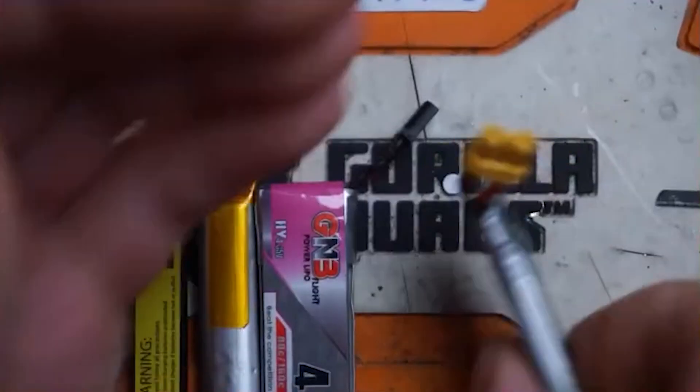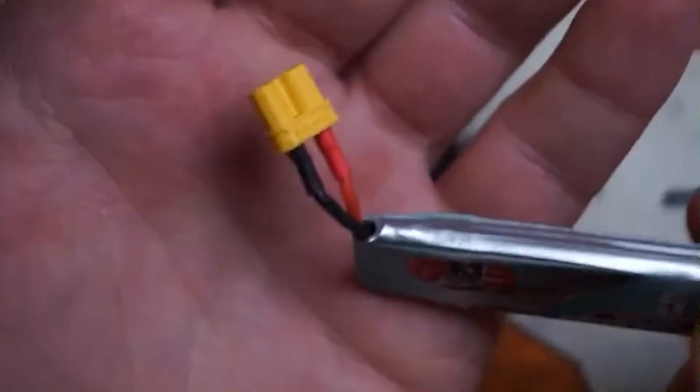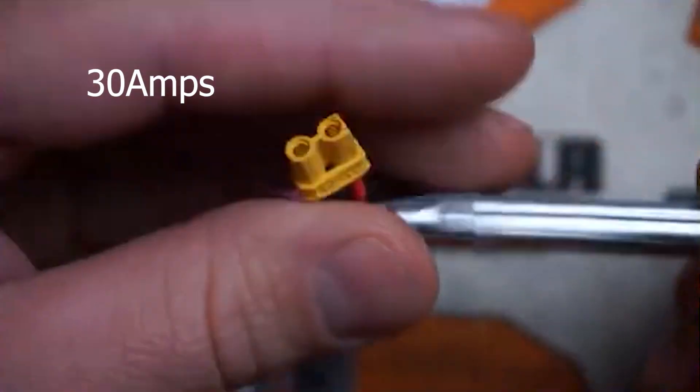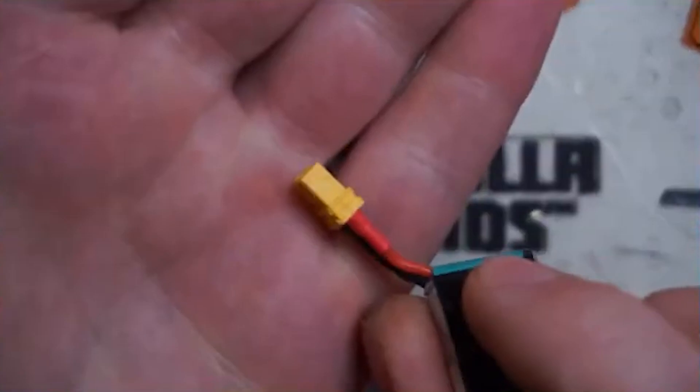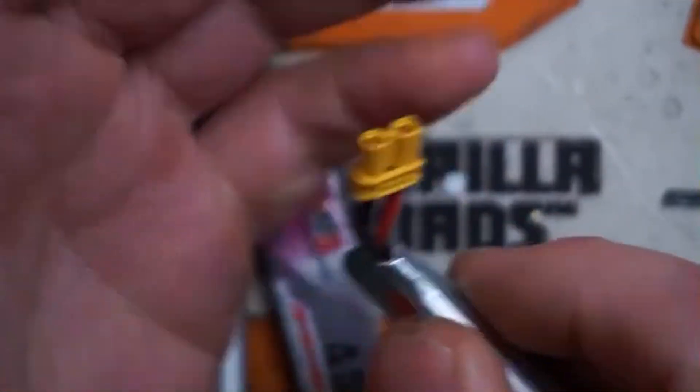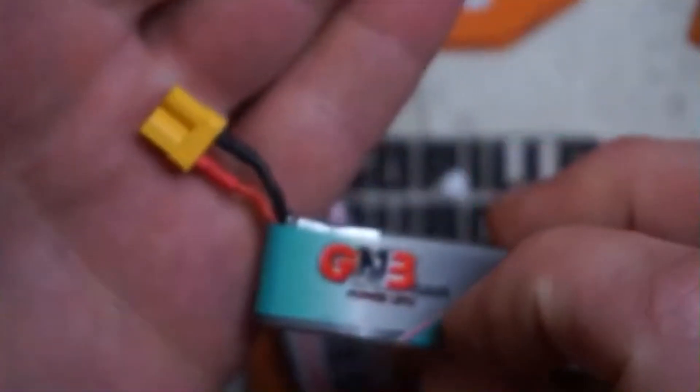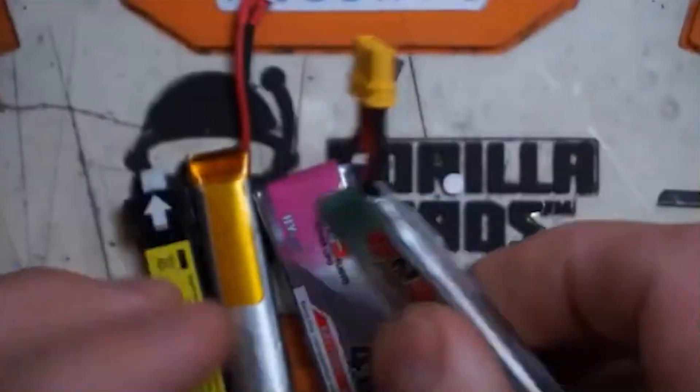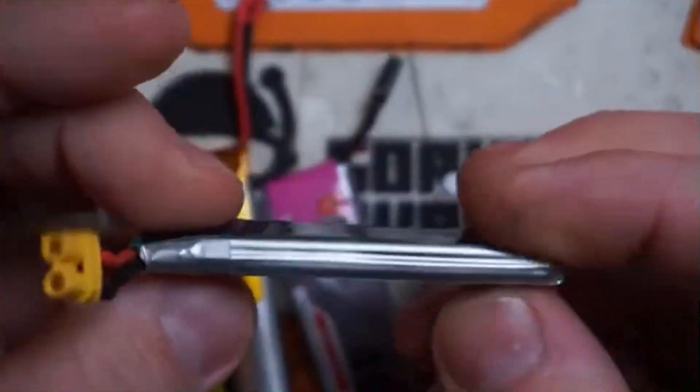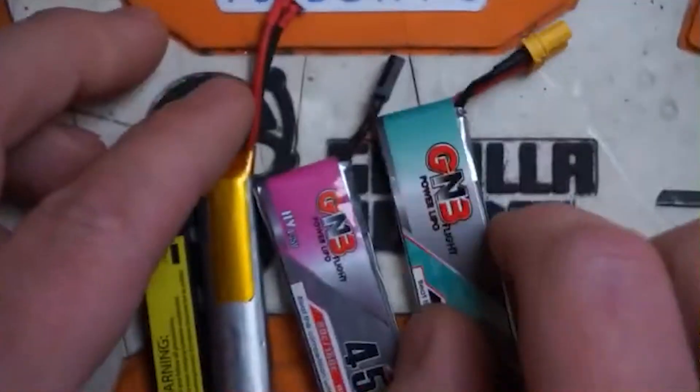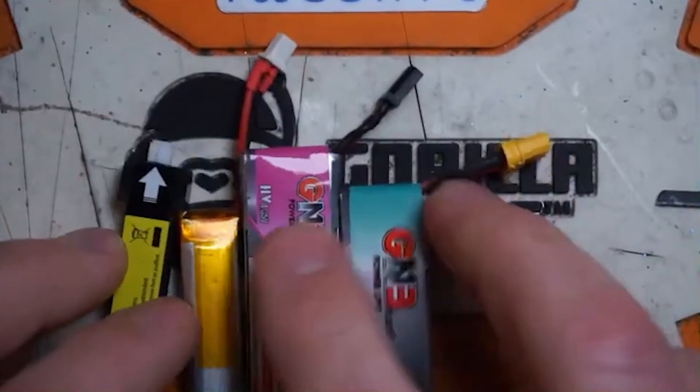This is a good connector. And then we have the XT30—probably the least common to see on a 1S package, but this is by far the highest current-rated connector out there. It's also heavy, so you don't see a lot of quads flying with these. If you're going to build something from FPV Cycle, their builds kind of recommend an XT30. I think this is about the only 1S pack I've seen with an XT30 on it from the factory; otherwise, you've got to modify your other batteries with that connector.